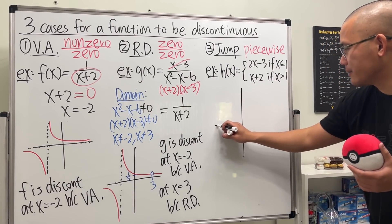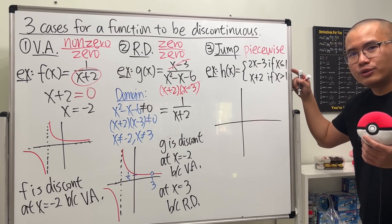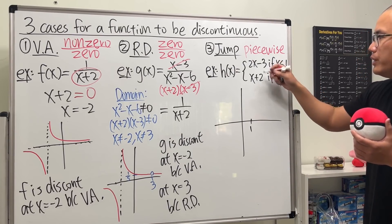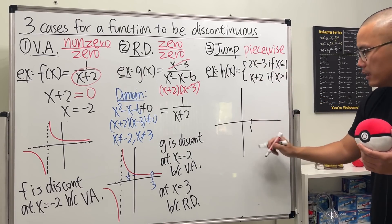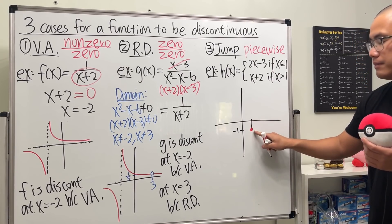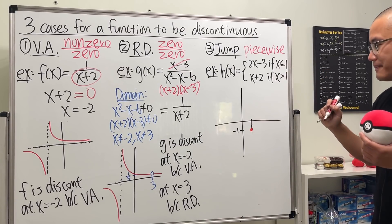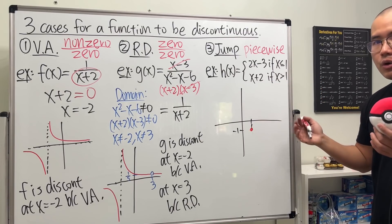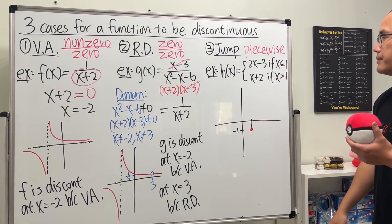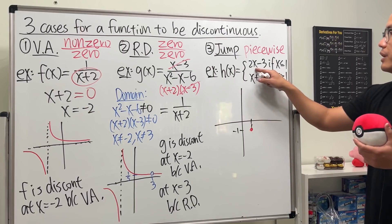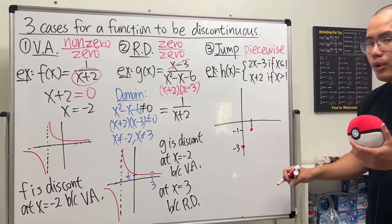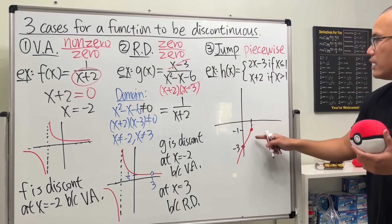The best way to illustrate this is with a picture. We pay attention to x equal to one — the most important point. Plugging one into the first piece: two times one minus three is negative one. So we place a closed circle at the point one, negative one, because the condition includes x equal to one. Picking another point, x equals zero gives negative three, so we connect those dots for the first piece.